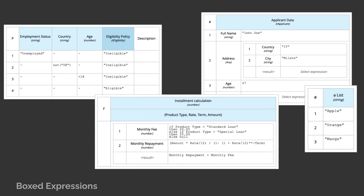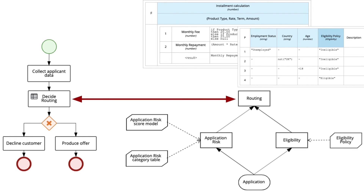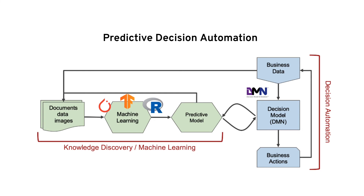Using DMN alone is useful to formalize business requirements and decision logic, but when using DMN in combination with other open standards, it becomes even more powerful. You can integrate DMN in a BPMN process for any process task that requires taking a decision before a split gateway. You can also combine DMN with processes and machine learning predictive models to achieve an explainable AI solution.